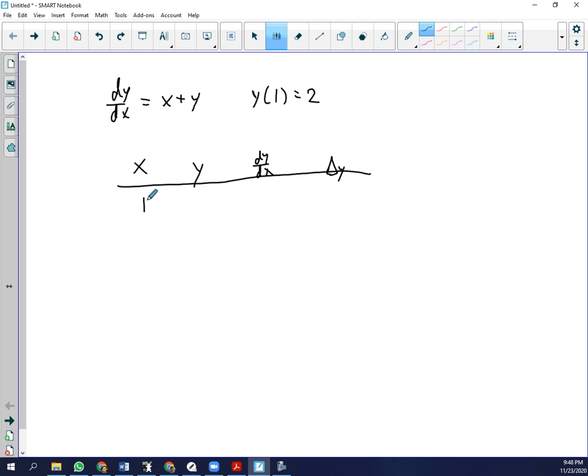So x, we're starting at 1, so we're starting at point 1, 2. The slope at that point is 3.